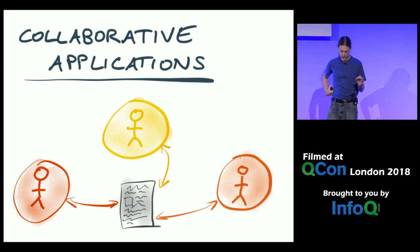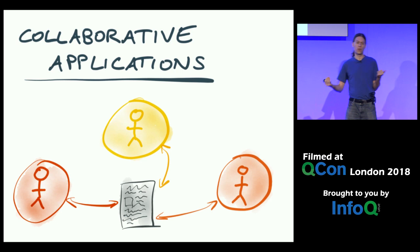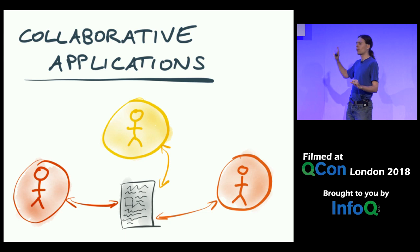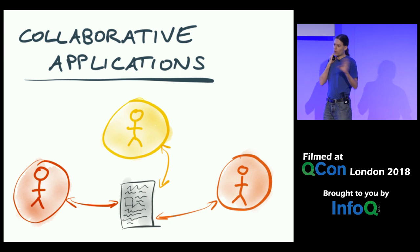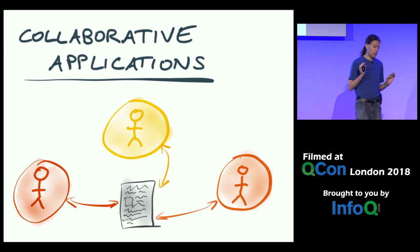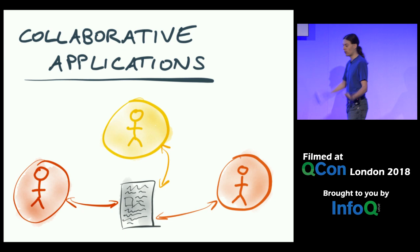If you were here this morning, Heidi Howard gave a great talk on consensus, which is also about getting several nodes in a distributed system to agree on something. This problem looks superficially similar to consensus, but as we'll explain later in this talk, it's actually a very different kind of problem. Even though it looks superficially similar, the properties it has are fundamentally different, and comparing those two will be an interesting part of this talk.